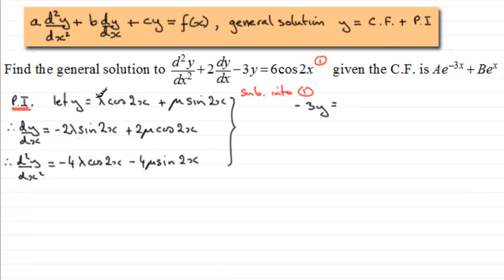So we've got that minus 3y equals, well, times this by minus 3, we're going to get minus 3 lambda cos2x. And if we times this term by minus 3, we get minus 3 mu sin2x.